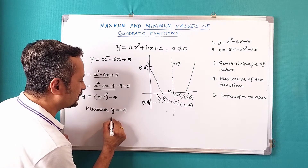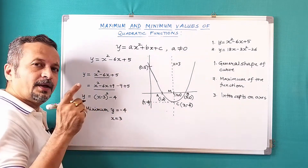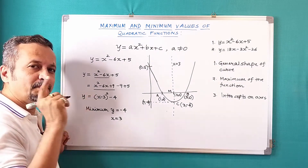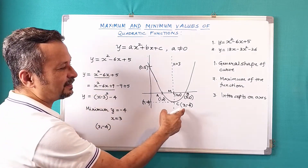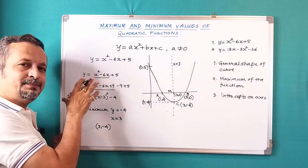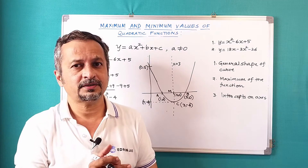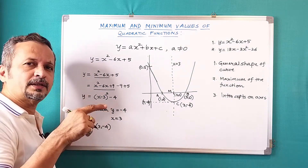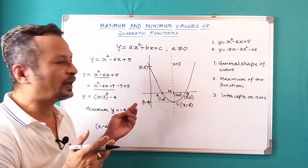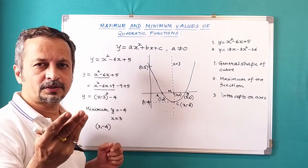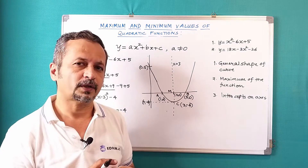The coordinates of the point of minimum are (3, -4), which is the same result we got using the earlier method. The completing-the-square method gives the minimum value directly and works much faster. For finding intercepts with the axes, you still need to equate the function to 0 and factorize. So the vertex C = (3, -4) is the minimum of this quadratic.